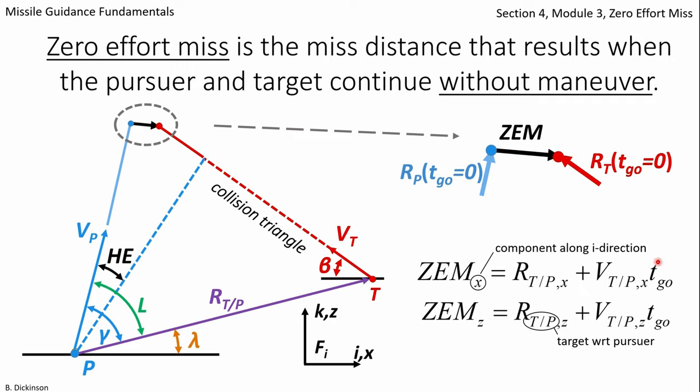Then multiplying by time-to-go and adding to the initial range in the horizontal direction gives the horizontal component of the zero effort miss vector. A similar interpretation can be made for the vertical component of the zero effort miss.